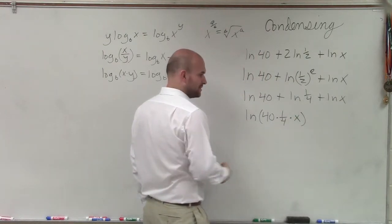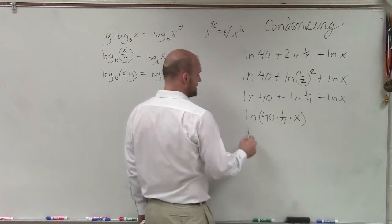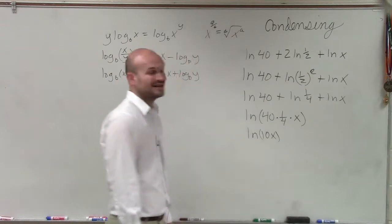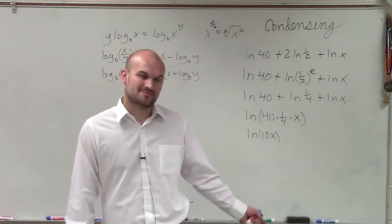Well, obviously, I can simplify this further. 40 times 1 fourth is just going to be 10. So I have ln of 10x is going to be my final simplified expression. Thanks.